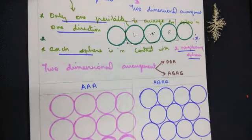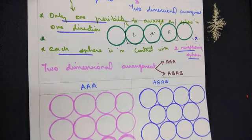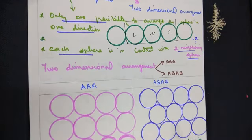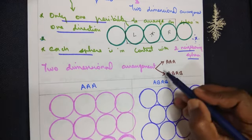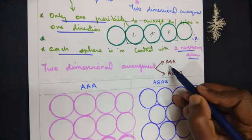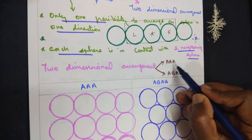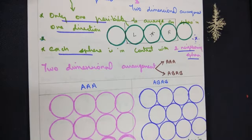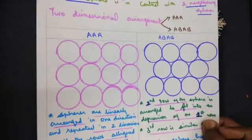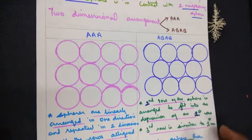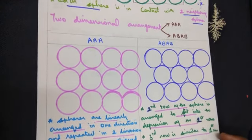We move on to the next type, which is two-dimensional arrangement. Two-dimensional arrangement is further divided into two categories. One is called AA type and the other one is called ABAB type. Let's see the diagram before we move on to the written explanation.